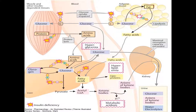To understand DKA, it is essential to understand the role that insulin plays in glucose homeostasis. DKA is a disordered metabolic state with absolute insulin deficiency with an increase in counter-regulatory hormones, such as glucagon, cortisol, and catecholamines.